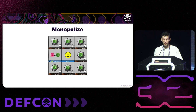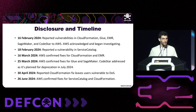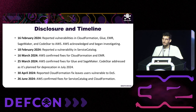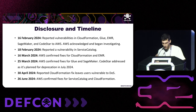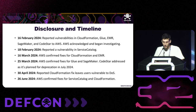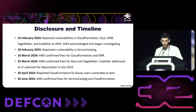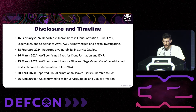Regarding disclosure and timeline: we reported these vulnerabilities in mid-February and AWS immediately started fixing them. We received final confirmation that all vulnerabilities were fixed by end of June. AWS's general approach was consistent — either adding a random sequence or number to the bucket name, prompting the user to choose a new bucket name, or ignoring the already-claimed bucket. AWS also indicated they would contact customers directly if they were affected.